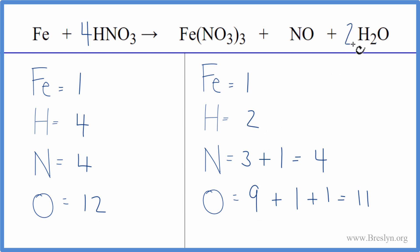We could put a two as our coefficient in front of H2O. Two times two, that would give us four. So the hydrogens would be balanced.